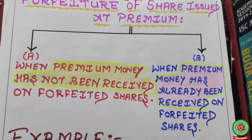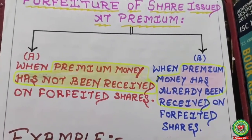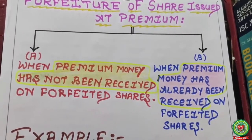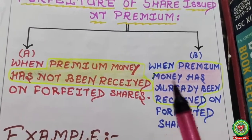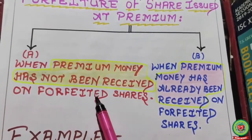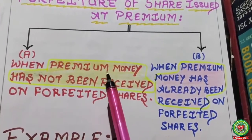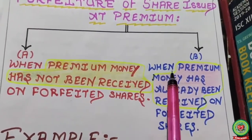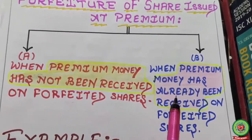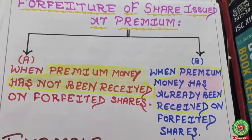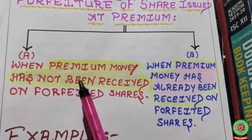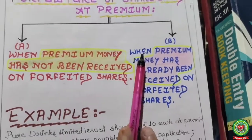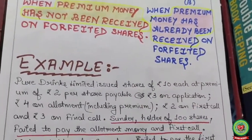Now today's main topic: forfeiture of shares issued at premium. When you cancel shares which were already issued at premium, two cases are available. Case 1: when premium money has not been received on forfeited shares. Case 2: when premium money has already been received on forfeited shares — meaning the shareholder did not pay the premium versus when the shareholder did pay the premium.